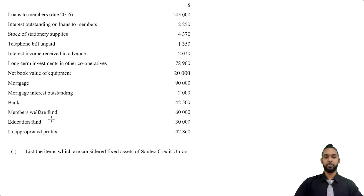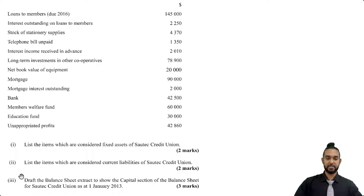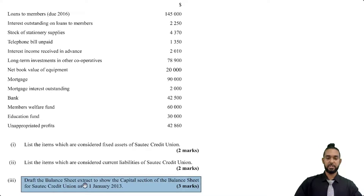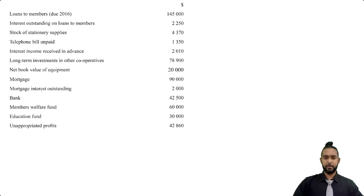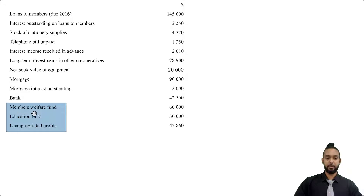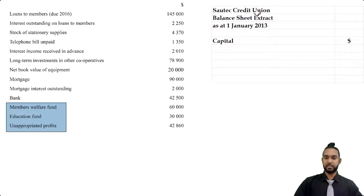So we've just done parts one and two. Let's scroll down and see what part three is asking us to do. It says: draft the balance sheet extract to show the capital section of the balance sheet for South Tech Credit Union as at 1 Jan 2013, worth three marks. The members welfare fund, education fund, and unappropriated profits are all going to be in the capital section because they are capital reserves. So let's pull up the statement of financial position extract as at 1 Jan 2013 — capital and reserves.